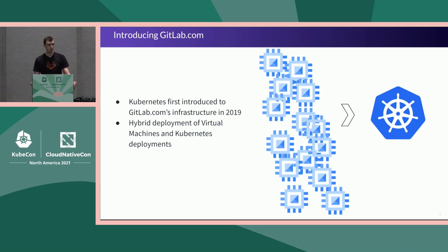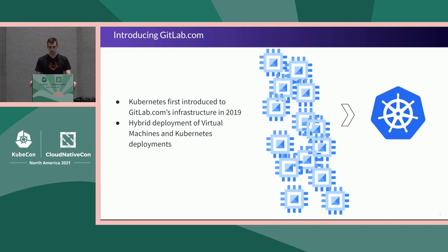We've also had customer demand to create a Helm chart that would enable customers to install an entire GitLab application on-premise inside of their existing Kubernetes clusters. With those two building blocks in place, we've been able to get our feet wet within Kubernetes. Today we have a hybrid architecture — both virtual machines still managed via Terraform and Chef — and about 90% of our front-end workloads are inside of Kubernetes.